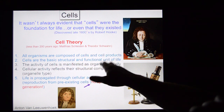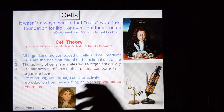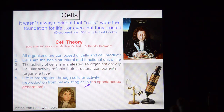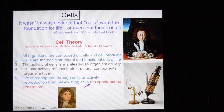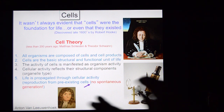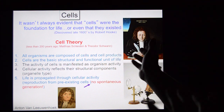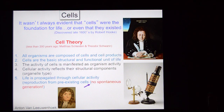Tenets three and four: The activities of cells manifest as organismal activity, and cellular activity reflects their structural components — meaning cells do what they do based on the type of organelles they contain, and cells make up tissues with a given function. And tenet five: life is propagated through cellular activity. Louis Pasteur would say, omni vivum ex vivo — only from life comes life. The concept of spontaneous generation is utter nonsense. We now know that because we have an understanding of microbes. It wasn't until unified cell theory that we understood life is propagated only through other living things.